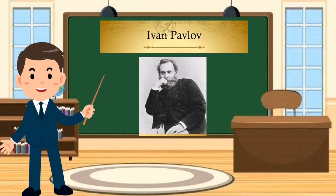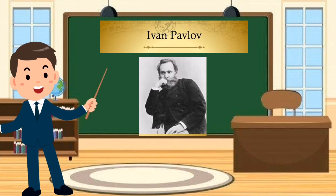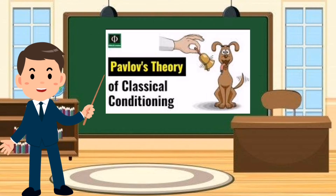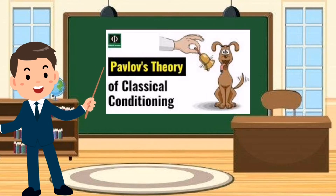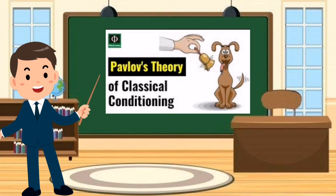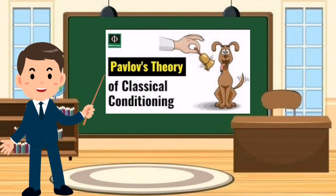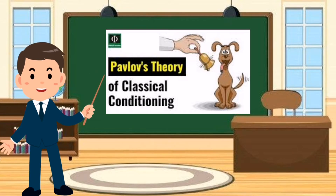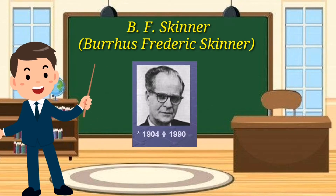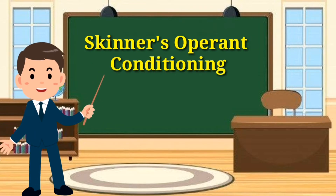Ivan Pavlov's biggest contribution to the field of psychology is classical conditioning, a theory about how behavior is learned. He is also known for testing his theory of classical conditioning on dogs. Through his experiments, he believed that automatic behavior could be manipulated. We also have B.F. Skinner — Bruce Frederick Skinner — whose theory of operant conditioning played a key role in helping psychologists understand how behavior is learned.